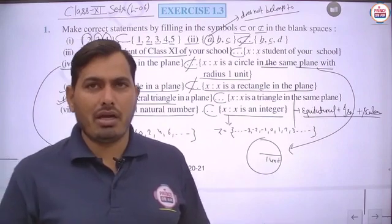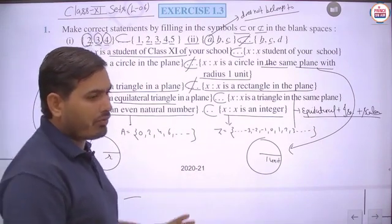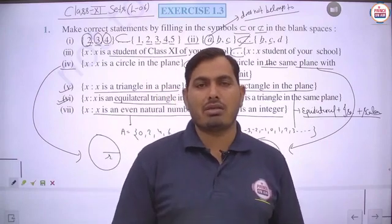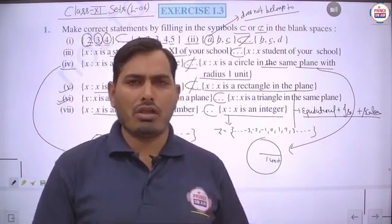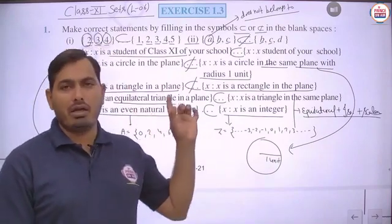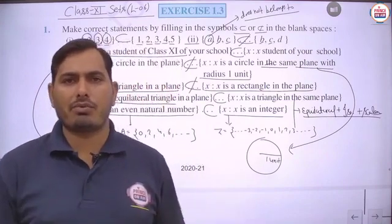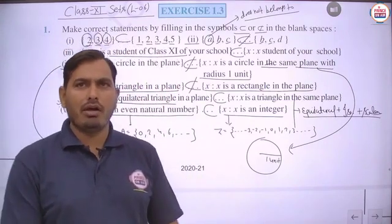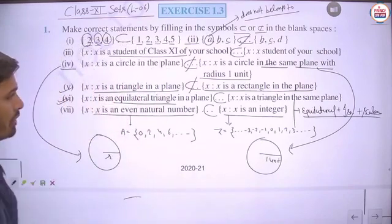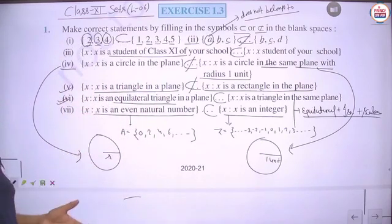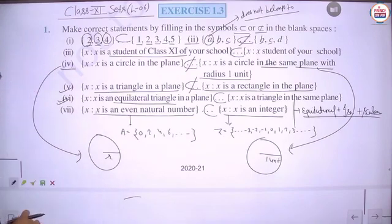The rule for all these parts is the same: check whether every element on the left-hand side belongs to the set on the right-hand side. If yes, it is a subset; otherwise, it is not. If a set builder form is given, convert it to roster form first for easier comparison.